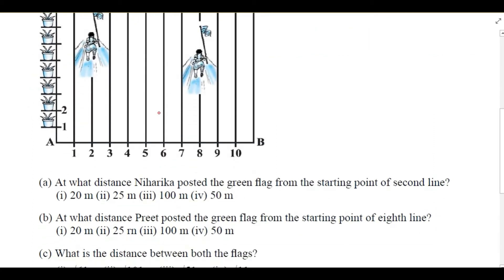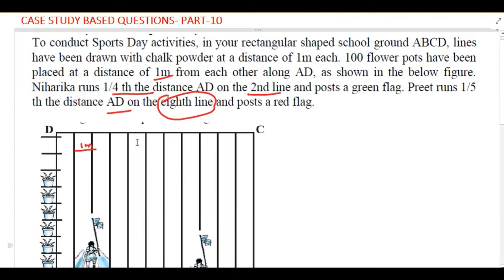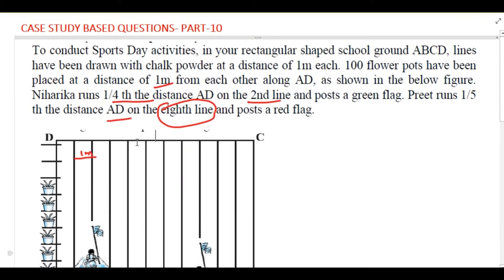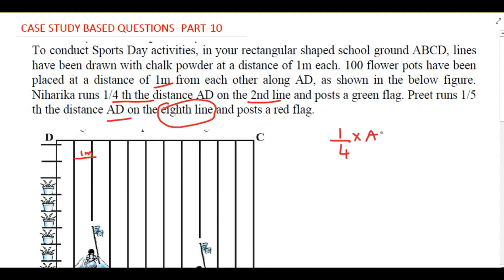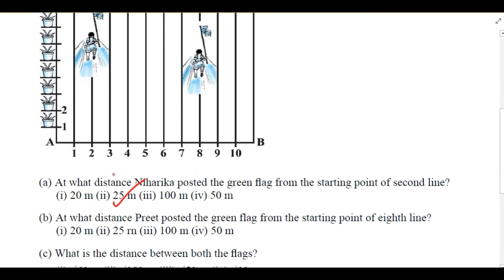At what distance did Niharika post the green flag from the starting point of the second line? She is on the second line. The total distance is 100, since 100 flower pots have been placed. She runs one fourth of the distance AD. One fourth of 100 is 25, so the answer is 25 meters. Her coordinate is (2, 25).